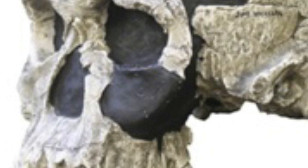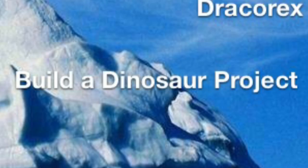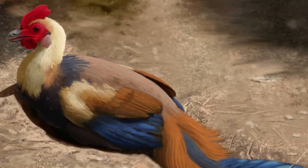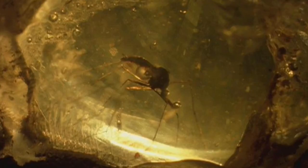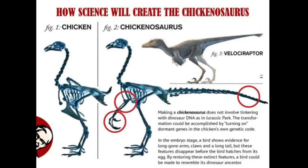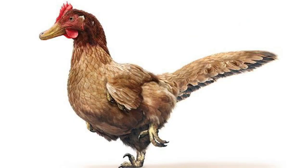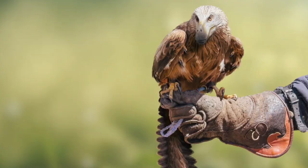Build-a-Dinosaur Project. This is an idea by paleontologist Jack Horner to recreate a dinosaur. Rather than extracting dinosaur DNA from mosquitoes fossilized in amber, a chicken or another bird's genetic code would have its dormant genes — which give it claws, teeth, and a long bony tail — turned on, making the bird look like a dinosaur when it hatches. Imagine actually having a pet dinosaur in the future.